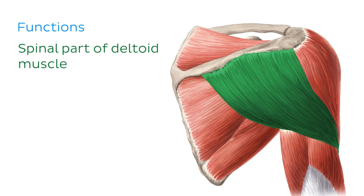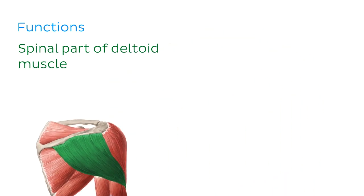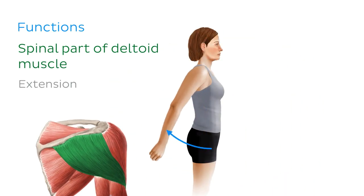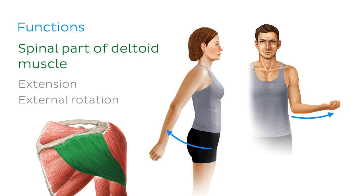As we can see, abduction is the movement of the arm away from the midline of the body. Lastly, we have the spinal part of the deltoid muscle. These fibres assist in extension and external rotation of the arm at the shoulder joint.